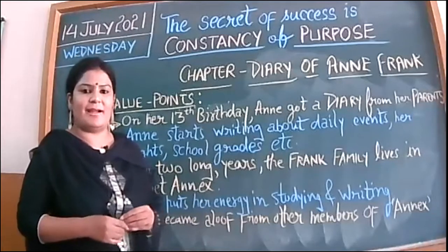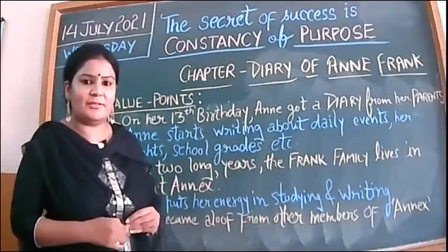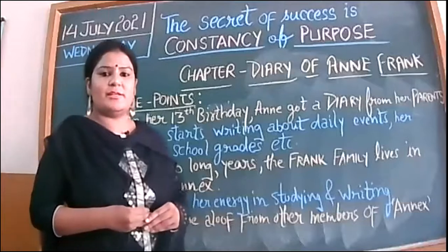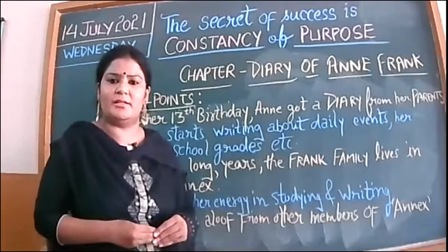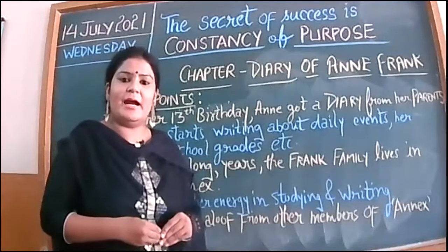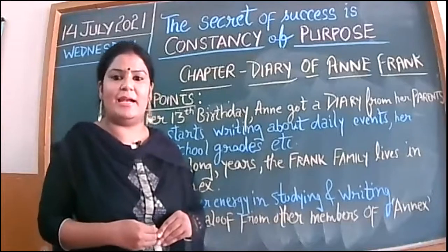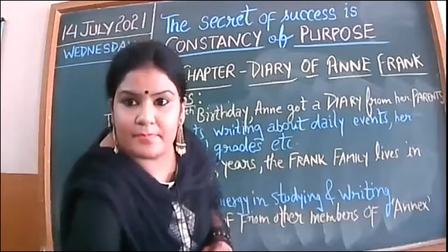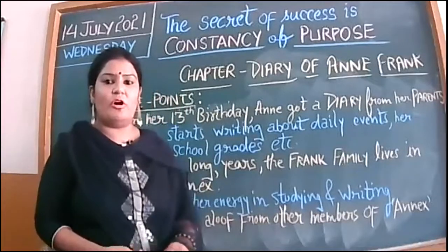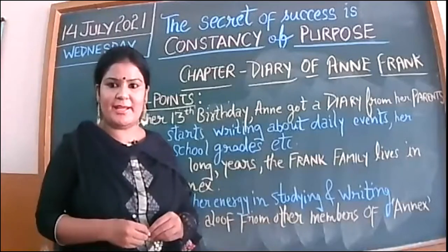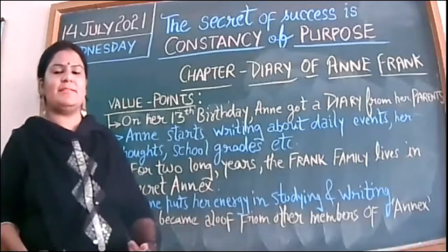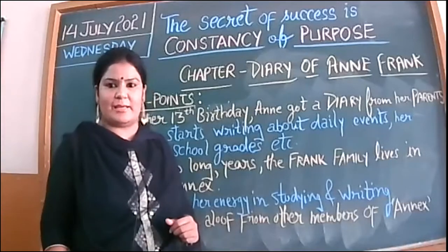Whenever Jews were found anywhere, they were sent to concentration camps and brutally handled. Now I'll give you the basic characters in the family of Anne Frank. Anne Frank is a 13-year-old girl. Her father is Otto Frank, her mother is Edith Frank, and she has one elder sister named Margot Frank. They all belong to the Jews community and are facing the same trouble — being thrown out of their native place and sent to concentration camps.